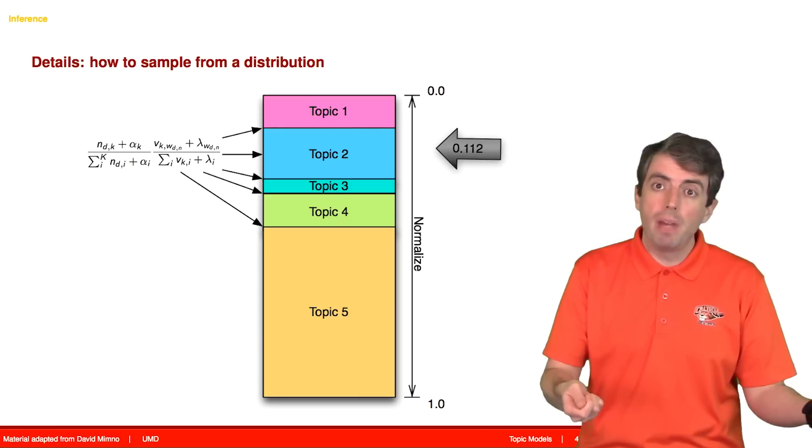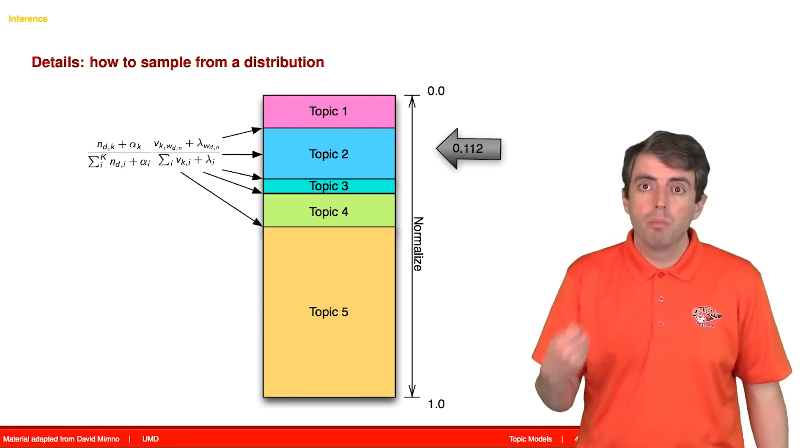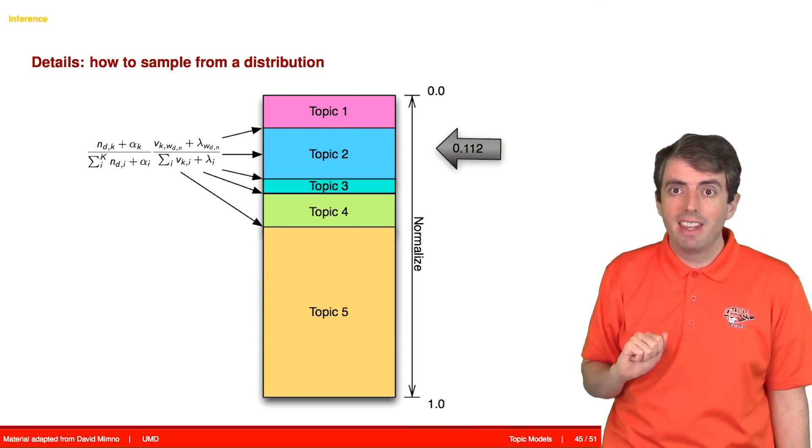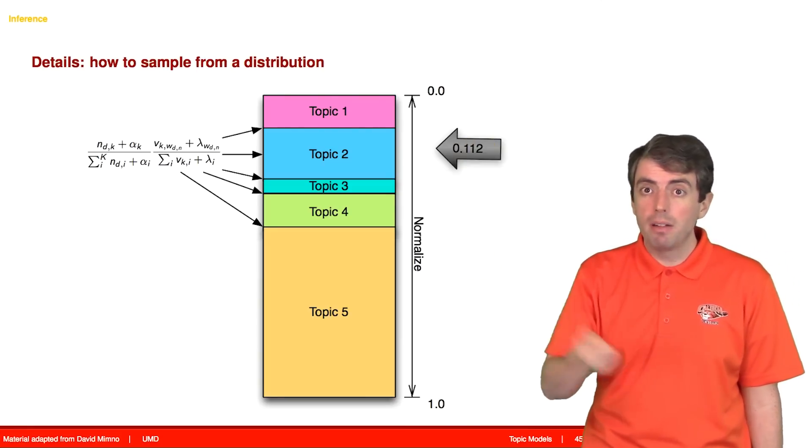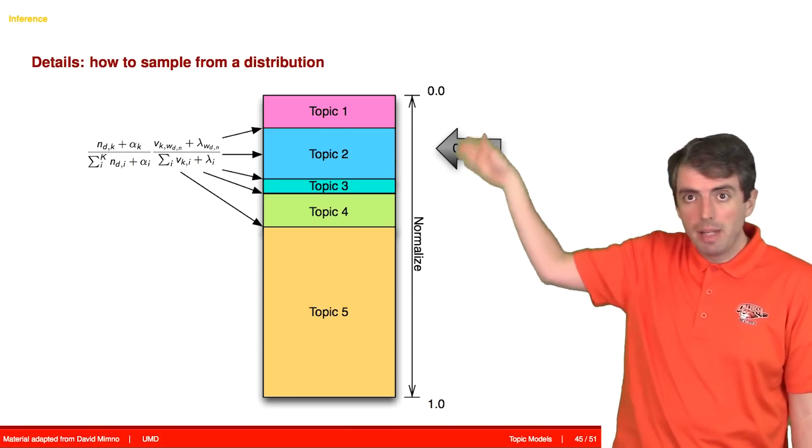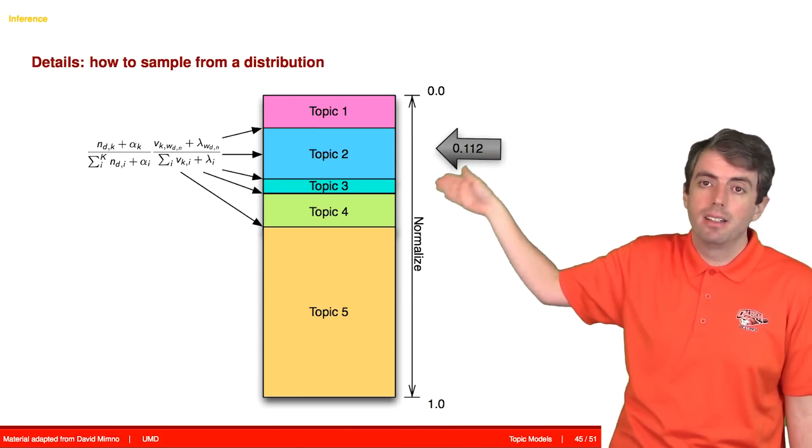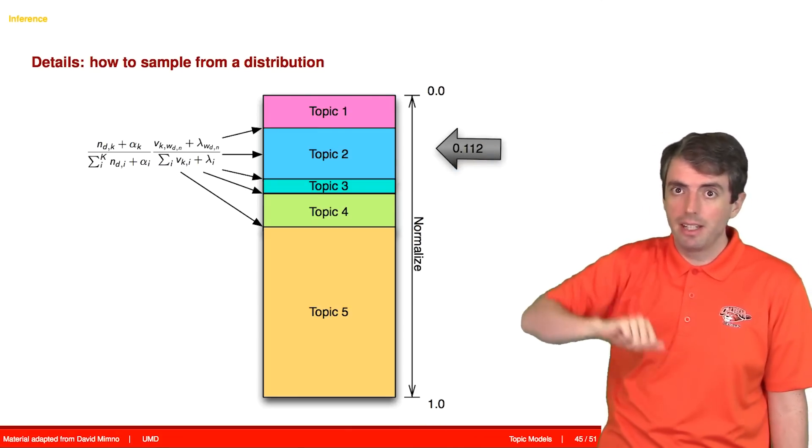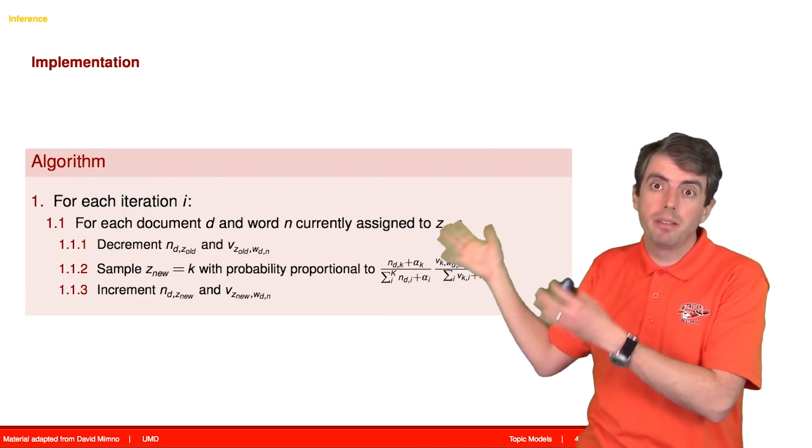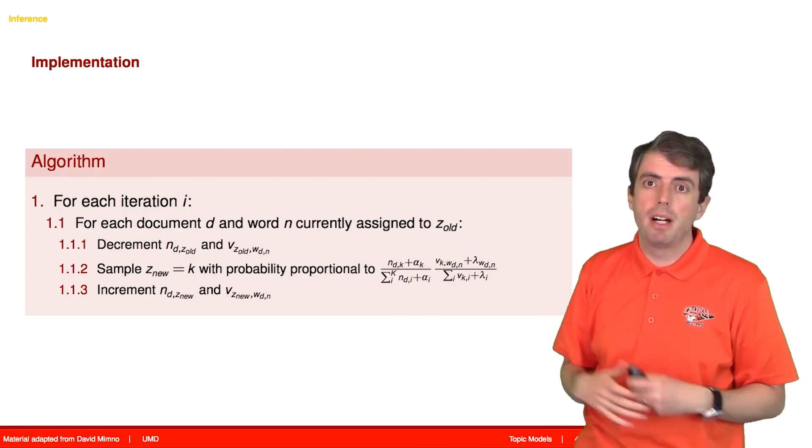And you can do that after you've normalized that distribution by drawing a random number between 0 and 1, and then finding the first bin that is greater than the value that you drew. So that's it. That's the very simple algorithm for fitting a topic model to data.